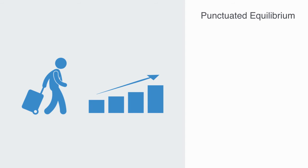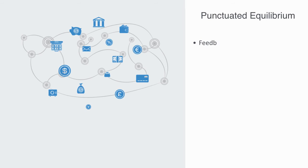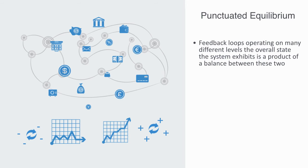Whereas negative feedback loops lead to an equilibrium state and a stable, linear state of development where the input and output ratio to the system stay constant, leading to an incremental linear progression — real-world complex systems like ecosystems and economies are a whole network of different positive and negative feedback loops operating on many different levels, from the micro to the macro. The whole state that the system exhibits is a product of the balance between these two. Negative feedback is holding it in its current configuration; positive feedback is always trying to drive it out of this equilibrium.